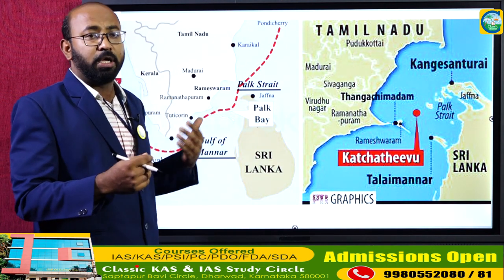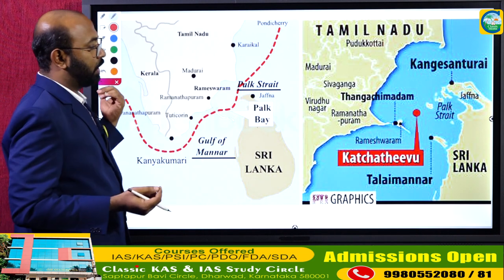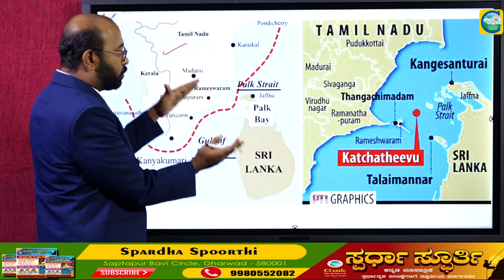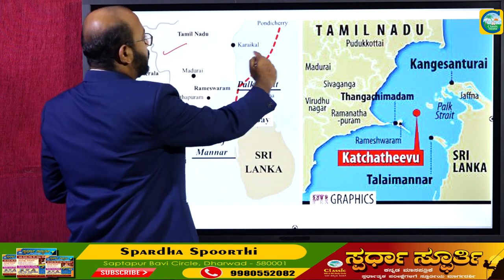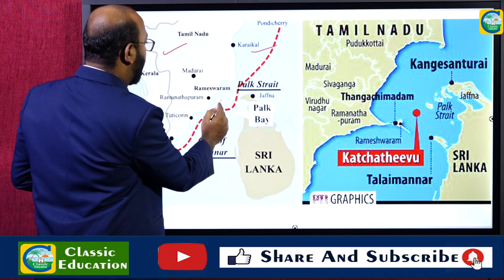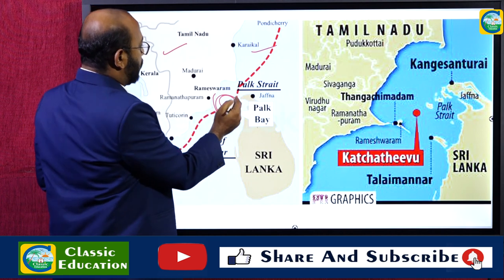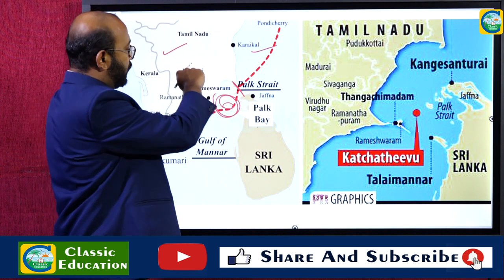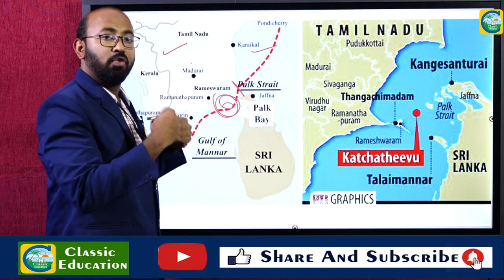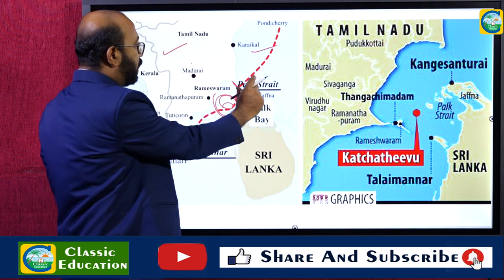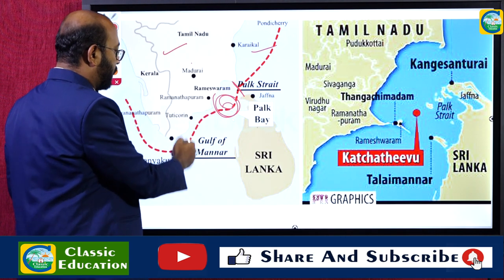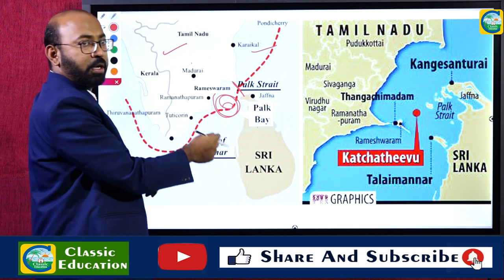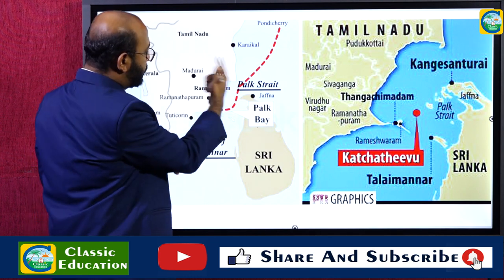Looking at the map, you can identify the location of Kachitivu Island. This is the Indian mainland; this is the island of Sri Lanka. Between these two land masses are water bodies — the Bay of Bengal and the Palk Bay. The narrow strip of water dividing Sri Lanka from India is the Palk Strait, which joins the Bay of Bengal and the Palk Bay. South of the Palk Bay is the Gulf of Mannar, also located between India and Sri Lanka.